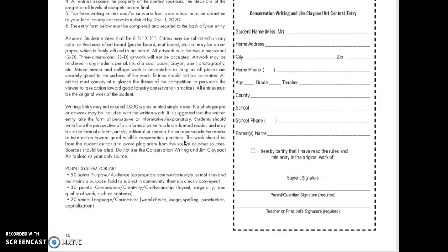If you want to choose something else, you may. It's your essay, but you have to have three reasons — three separate paragraphs about why we should protect or conserve trees. Your fifth paragraph will be your conclusion at the end. So you're going to have five paragraphs: the first one is your introductory paragraph, you will have three body paragraphs — each covering one reason why we should conserve trees — and then your conclusion or summary paragraph.